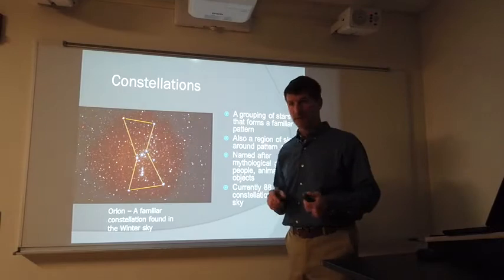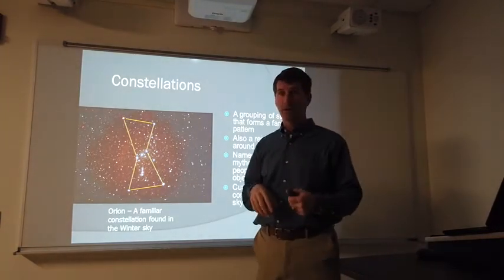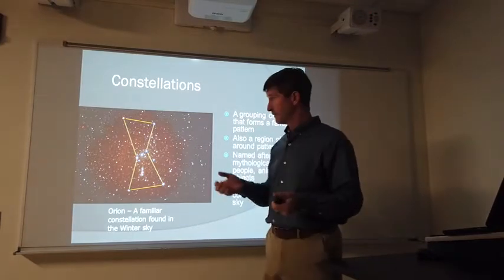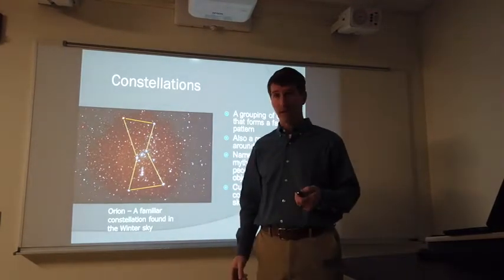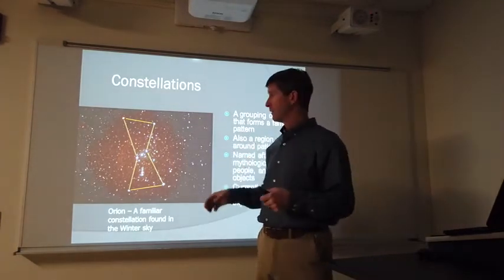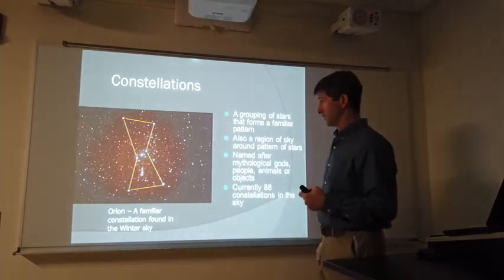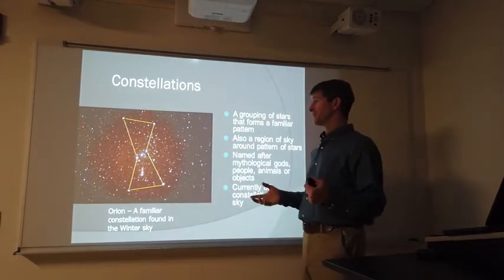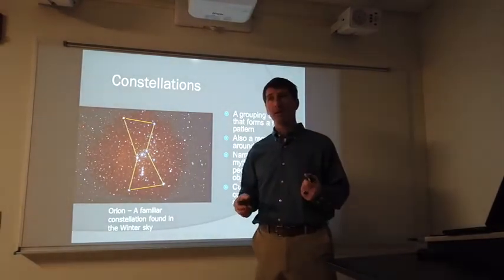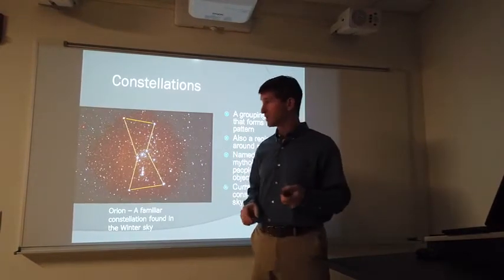When we look at the stars in the nighttime sky, they appear to be points of light. In fact, our eyes cannot resolve these points of light, and what is on our retina is really a diffraction pattern from the light passing through our iris. Even in the best telescopes, all but a few stars can actually be resolved or can actually see any detail.